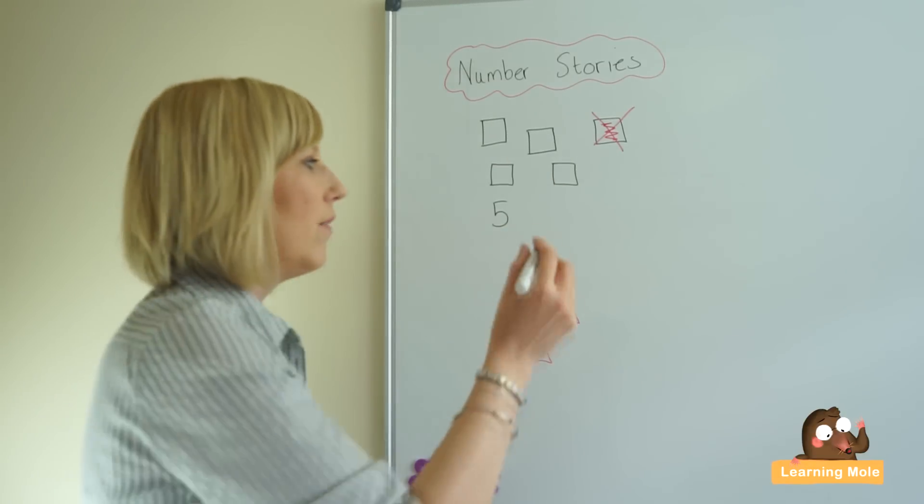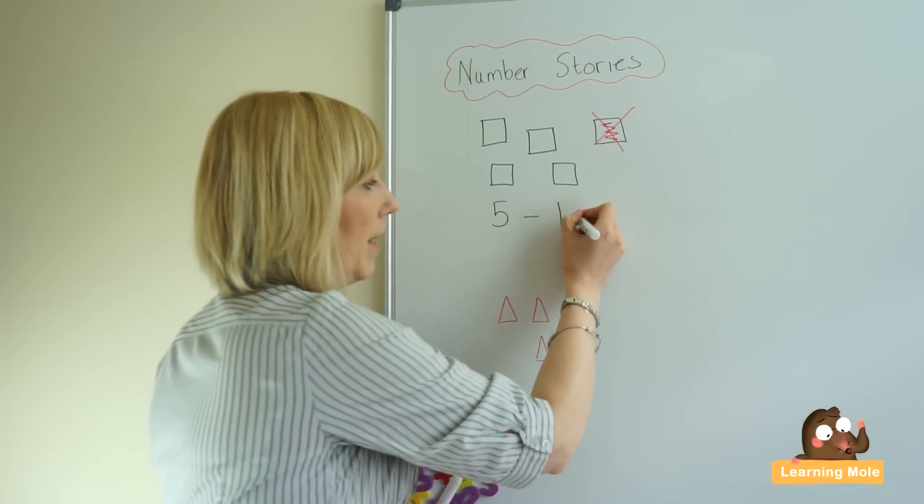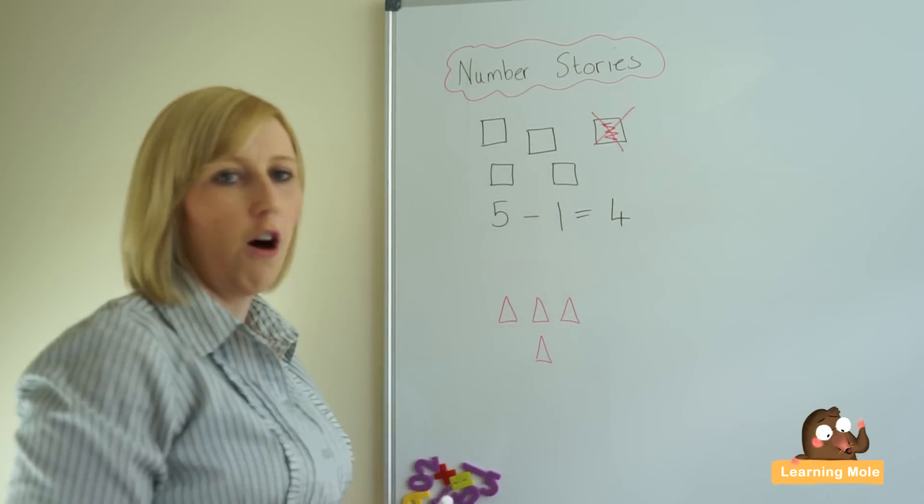Okay, we started with five. How many did you take away? How many were broken? One. And how many have you got left? And we've got four.